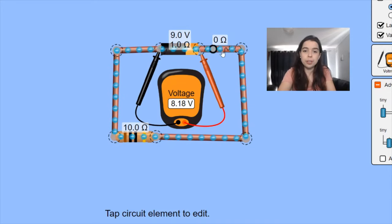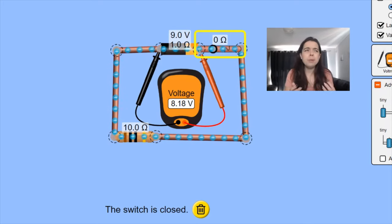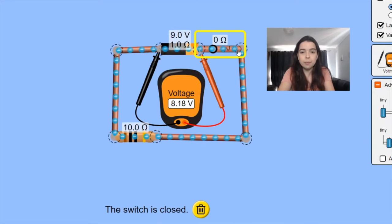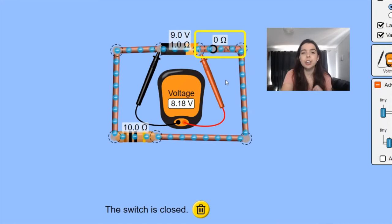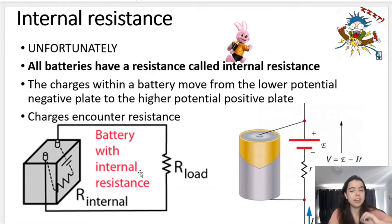When the switch was open, the voltmeter read the EMF. When the switch is closed, that voltmeter reading drops to V external, which is 8.18 volts. What happened to the rest of the voltage? We refer to that as V internal, or more informally as 'lost volts.' The battery experiences this voltage drop because it must give some of its energy to itself to get the charges flowing through — since all batteries have an internal resistance, and charges encounter resistance moving from the negative to the positive plates inside the battery.